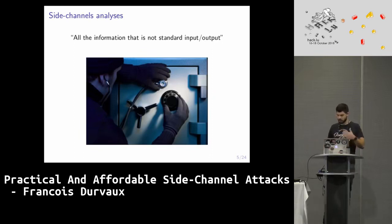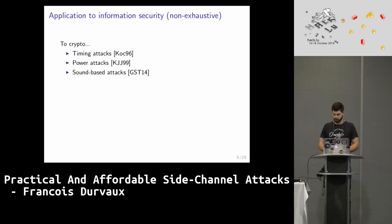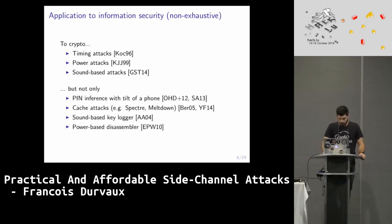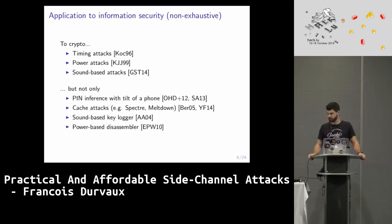In this example, someone is using the sound of the mechanics behind the button to go faster than broadcasting all possible combinations. When it applies to information security, the most obvious field is cryptography, because people use it to retrieve secret keys. People also use it to find PIN codes, log keystrokes, and cache attacks came back on stage with Spectre and Meltdown.